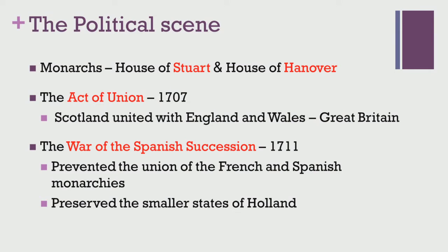The ruling monarchs were mainly from the house of Stuart and from the house of Hanover. There was also this act of union at the beginning of the 18th century which ensured that Scotland united with England and Wales, also leading to the emergence of Great Britain. There was also the war of Spanish Succession which happened in 1711, which prevented the union of the French and Spanish monarchies and also preserved the smaller states of Holland. This was the political background in which most of this art, literature and other social institutions were emerging in Augustan England.